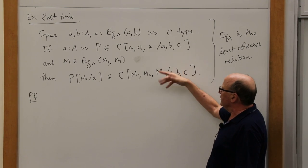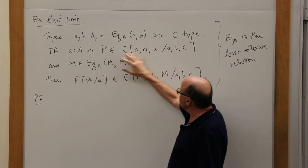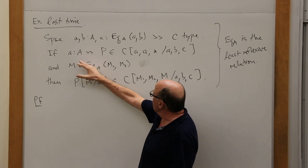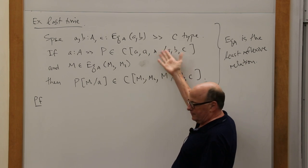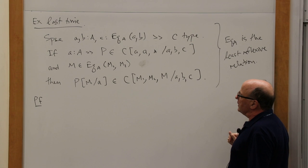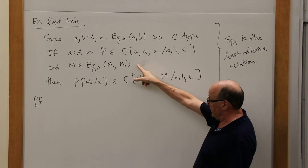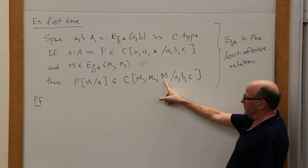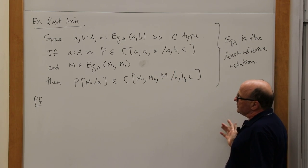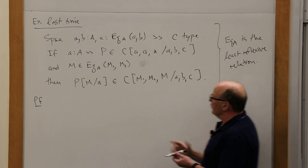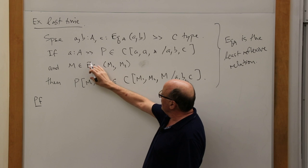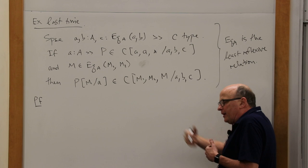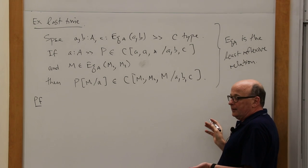I want to have the star there for a reason that will emerge. The idea is: if C is a reflexive relation — so there's a proof for any A in A that C holds of A and A, with the star as the witness — and I have a proof of equality between M1 and M2, then C will hold for M1, M2, and M for that particular proof. That's the reason for having the M in there.